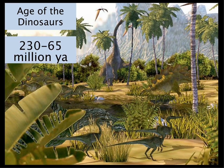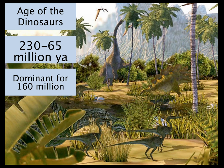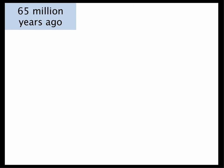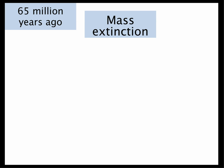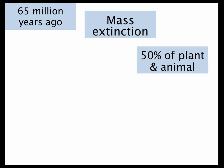The age of the dinosaurs: between 230 and 65 million years ago, massive reptiles ruled the earth and were dominant for 160 million years. Our ancestors — tiny mammals — did evolve about 200 million years ago, hiding around in the bushes. So 65 million years ago, the dinosaurs disappeared along with lots of other species — this is called a mass extinction. In fact, half of all plant and animal species died, and 90% of the biomass of life disappeared around 65 million years ago.